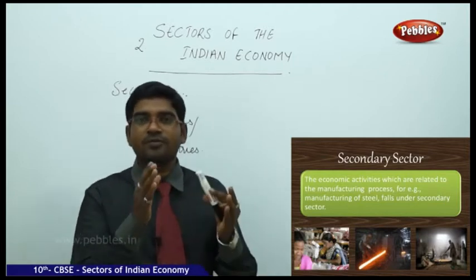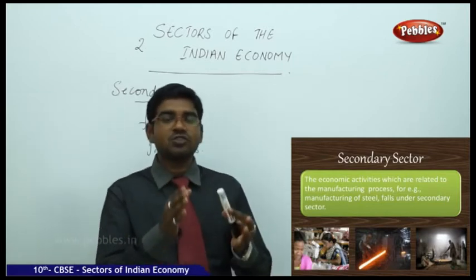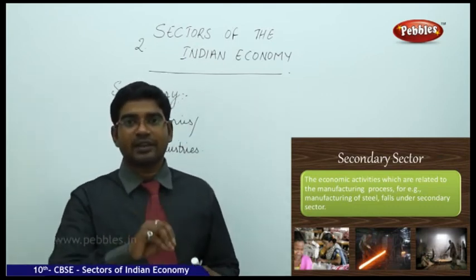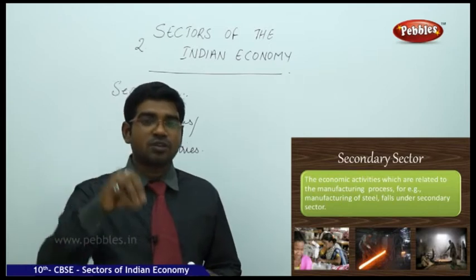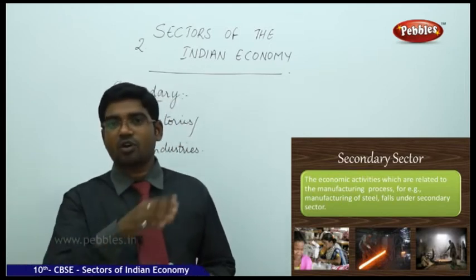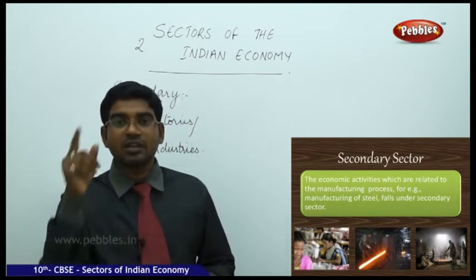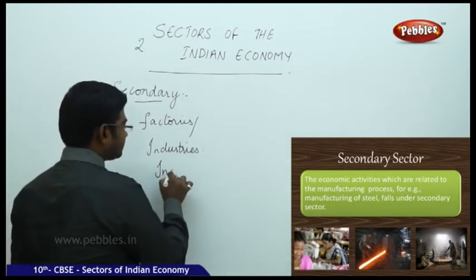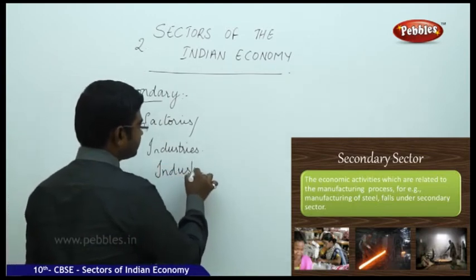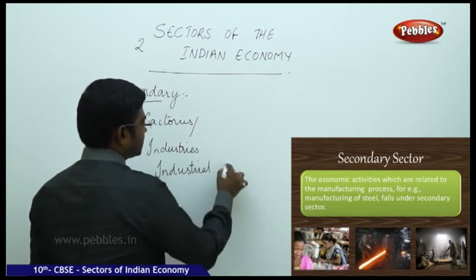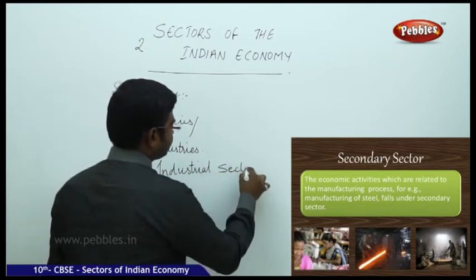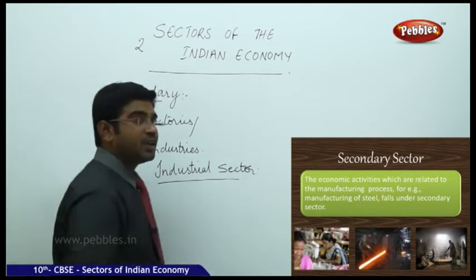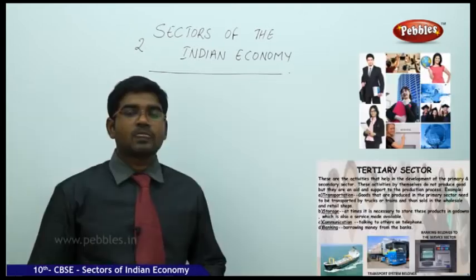Another example: mud from the earth is taken and pots and bricks are made. These bricks are used to construct big buildings. So the same mud available in nature is taken as raw material and transformed into something great. This transformation is highly important in the secondary sector. Whatever gets transformed from its original state to a new form is called the secondary sector. As this is mostly done in industries or factories, it is also called the industrial sector.